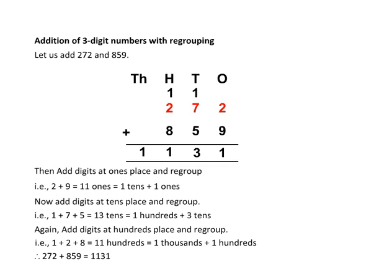Therefore, 272 plus 859 is equal to 1131.